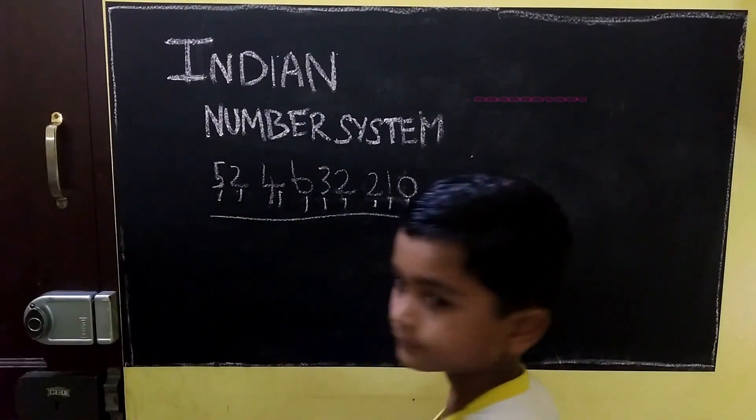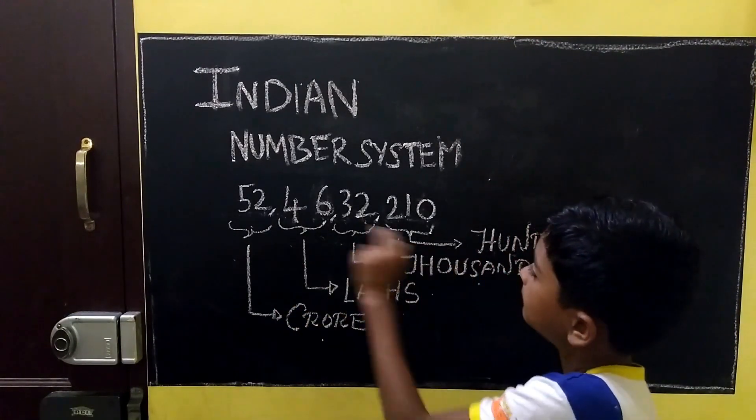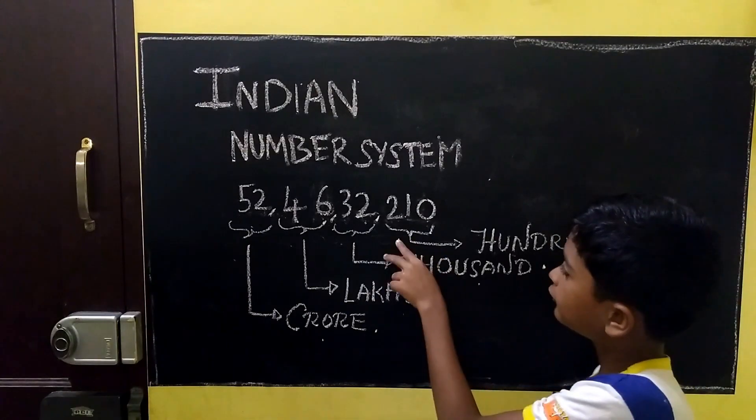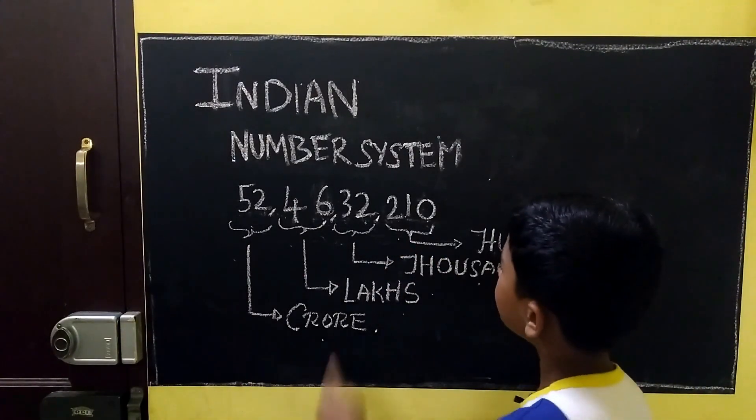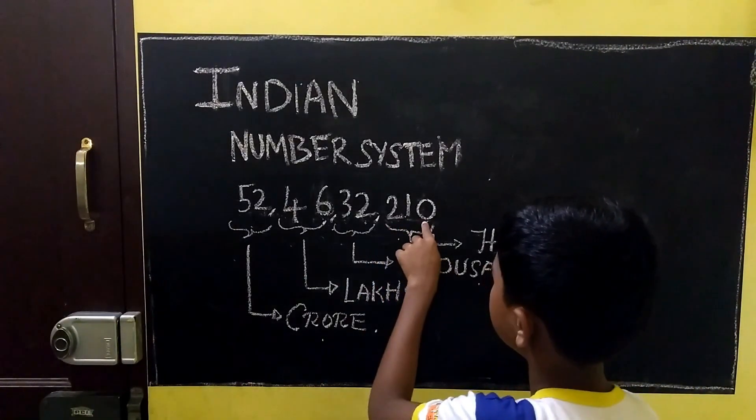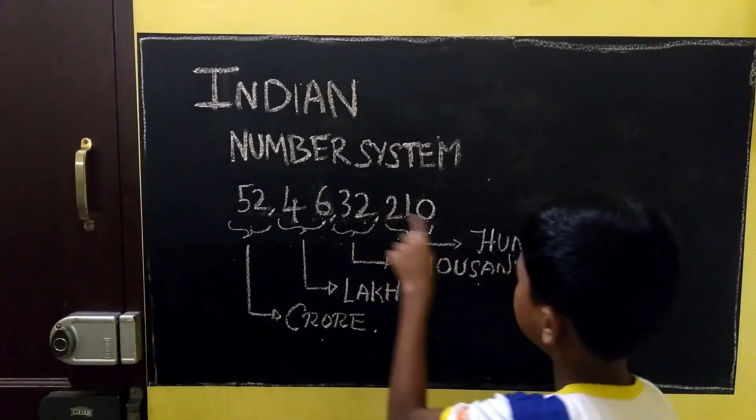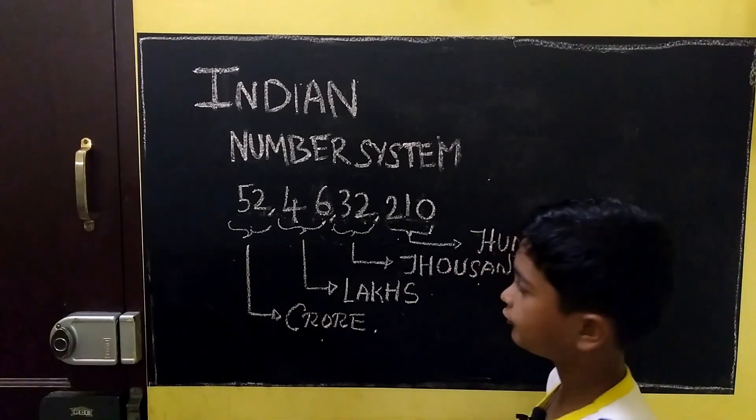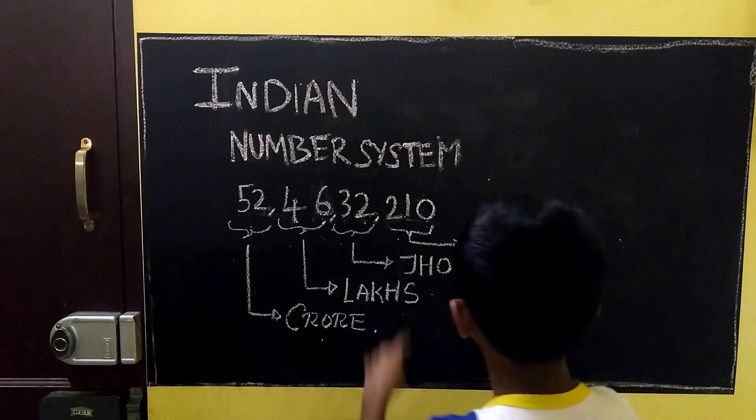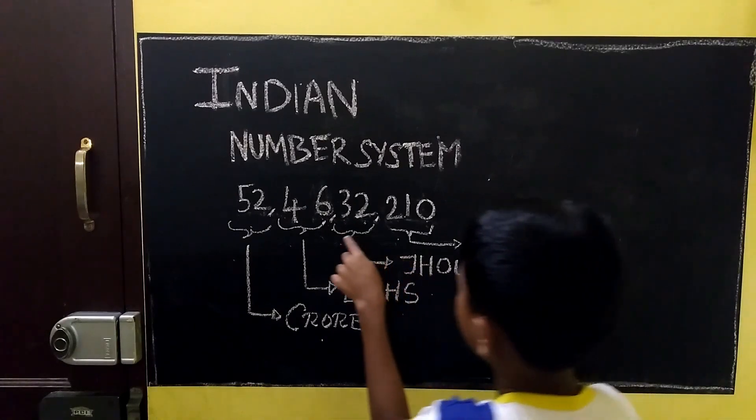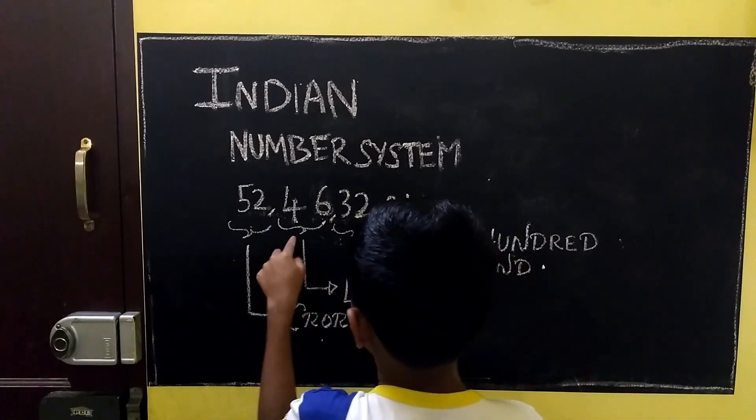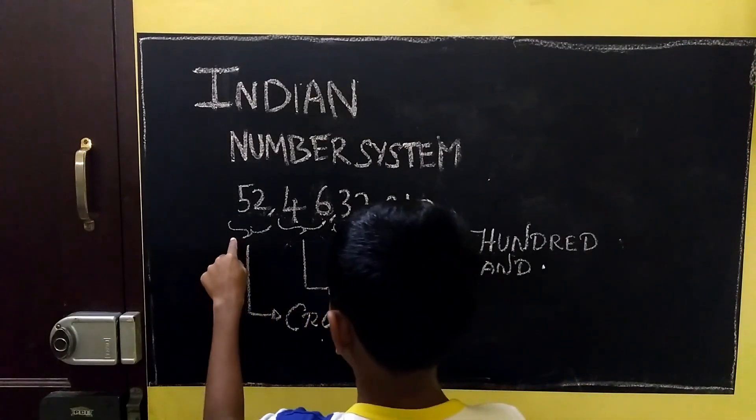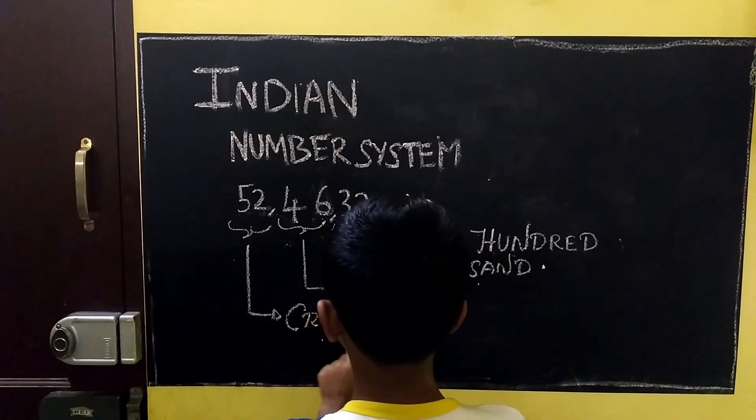We have to read this big number in Indian number system. We have to separate the numbers. After the first three numbers, we have to put a comma. After every two numbers, we have to put a comma. The first three numbers is hundreds, the second two numbers is thousands, the third two numbers is lakhs, the fourth two numbers is crores.